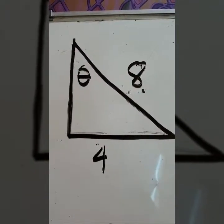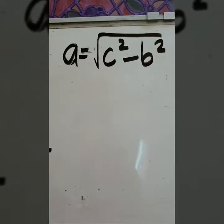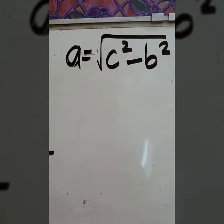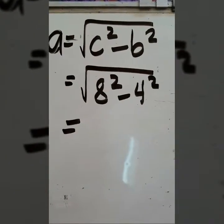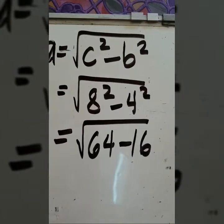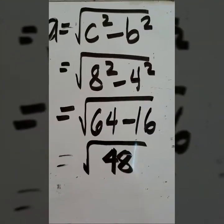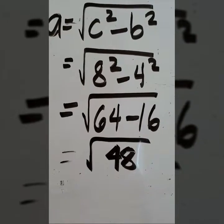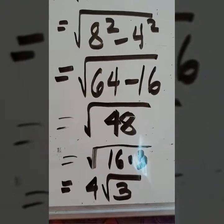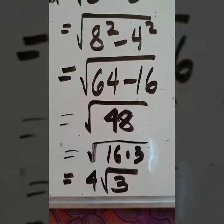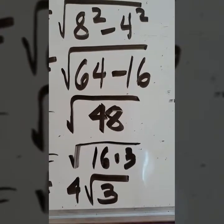For example number 2, the given hypotenuse is 8 and the opposite side is 4. Since we are looking for the adjacent side, we use the formula: a equals the square root of c squared minus b squared. So we have the square root of 8 squared minus 4 squared. 8 squared is 64 and 4 squared is 16. 64 minus 16 is 48. Since 48 is not a perfect square, we simplify: the square root of 48 equals the square root of 16 times 3, and the square root of 16 is 4. Therefore, the adjacent side is 4 square root of 3.